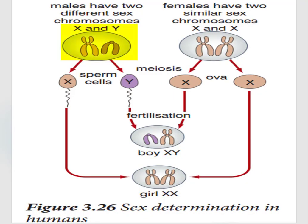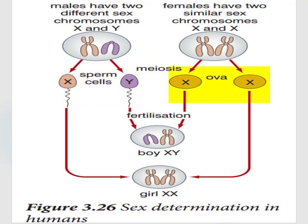Males have two different sex chromosomes, X and Y. Females have two similar sex chromosomes, X and X. Through meiotic cell division, or gametogenesis, males produce sperm cells containing either an X chromosome or a Y chromosome. Similarly, females also produce egg cells through gametogenesis that contain X chromosomes.